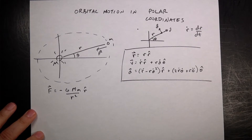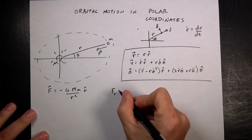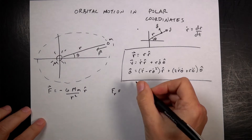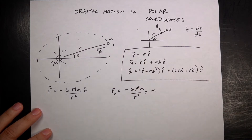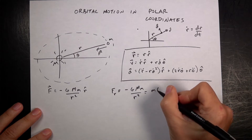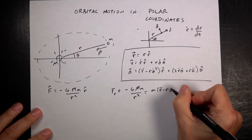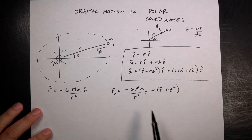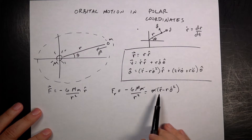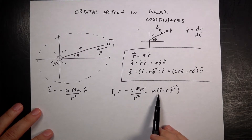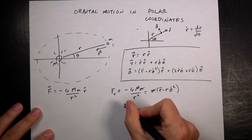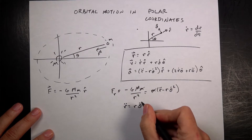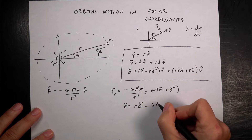Using Newton's second law, I split it into r-hat and theta-hat components. For the r component: −G·M·m/r² = m·(r-double-dot − r·theta-dot²). The mass cancels, and solving for r-double-dot gives: r-double-dot = r·theta-dot² − G·M / r².